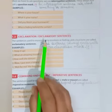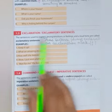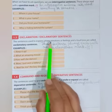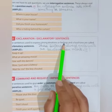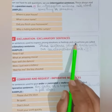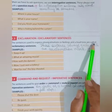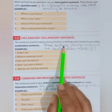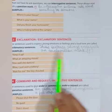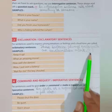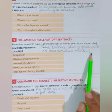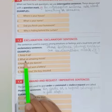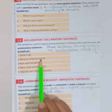Next one is exclamatory sentences. These sentences are used to express strong emotions or feelings in a loud tone, and are called exclamatory sentences. These sentences always end with an exclamation mark. This is the mark. Examples: Keep it up! What an amazing movie!